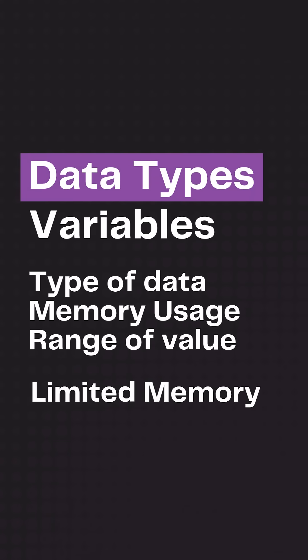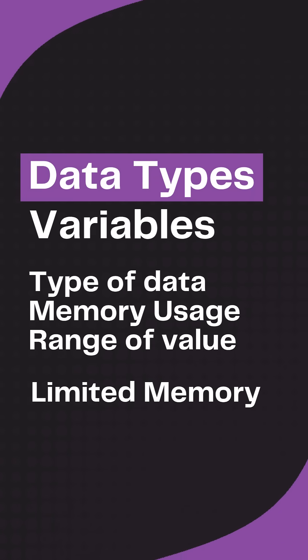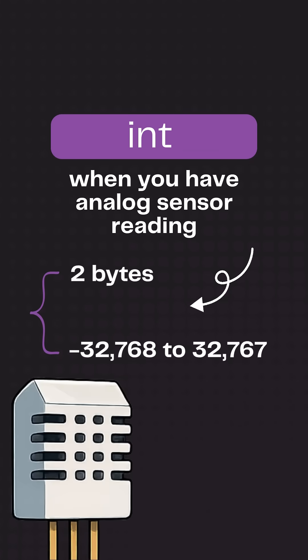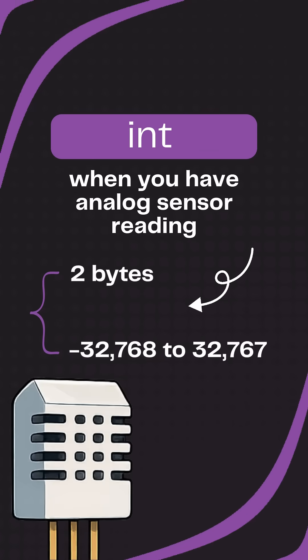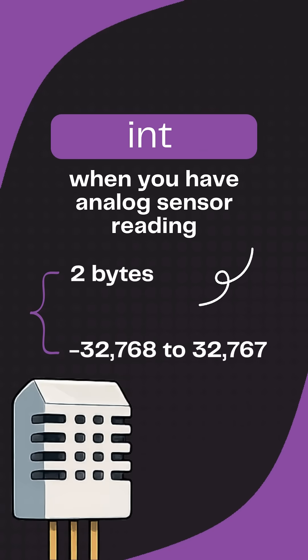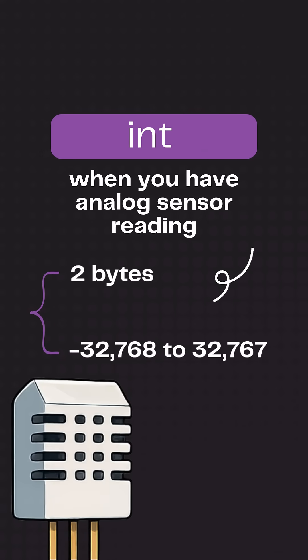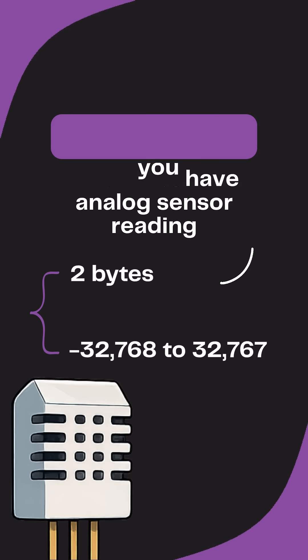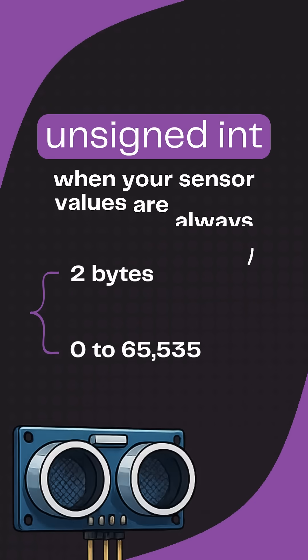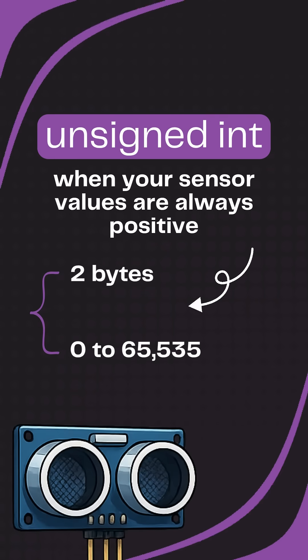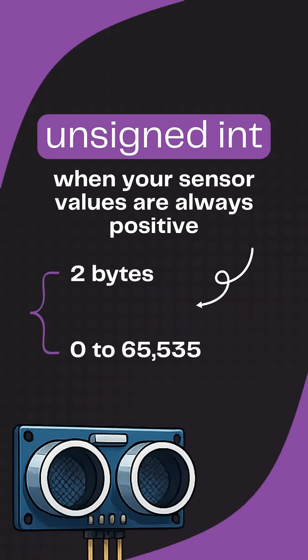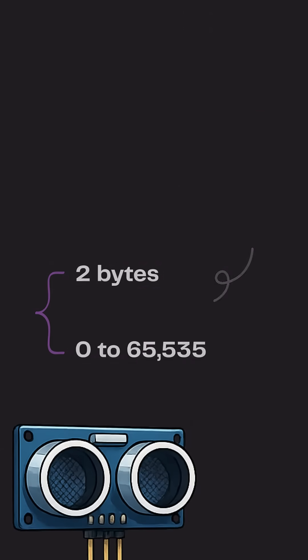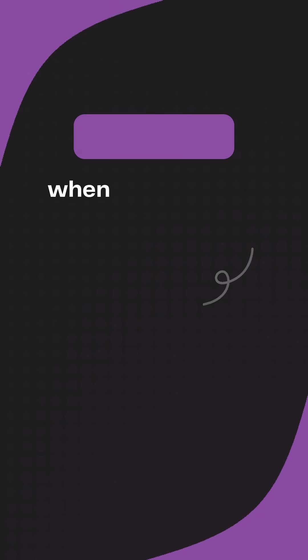These things are essential due to limited RAM in microcontrollers. Use float for analog sensors — it stores both positive and negative values, perfect for temperature data. Use unsigned int for distance sensors — it only stores positive values and saves memory.